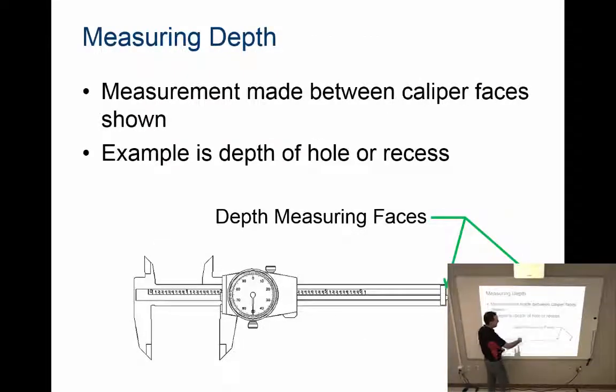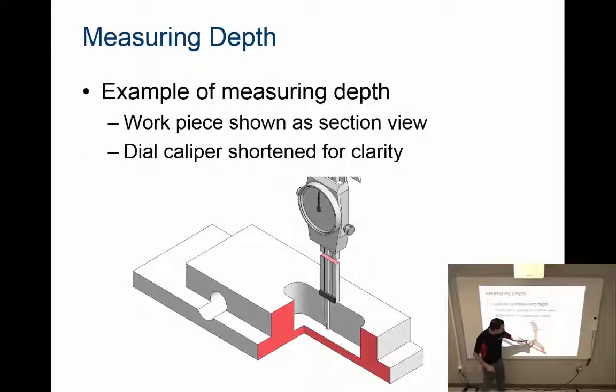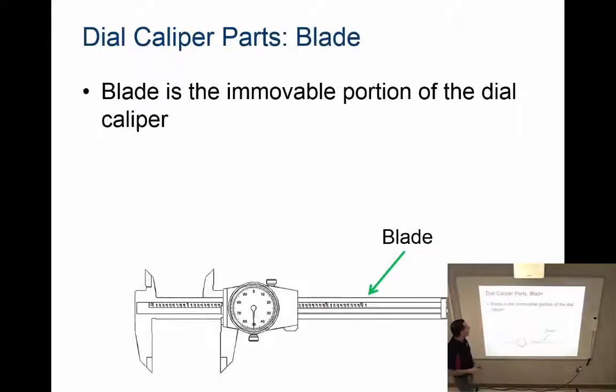The last one is depth. At the very edge of the caliper is a small piece that will come out to record the depth of an object. I would lay this portion of the caliper flush with this space and then use this to record the actual depth. No matter which way we're doing the measurements, they're read the same way on the caliper.